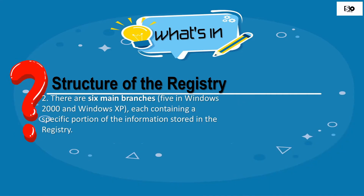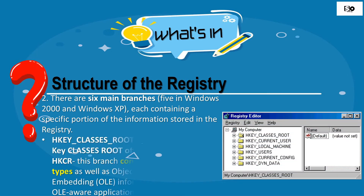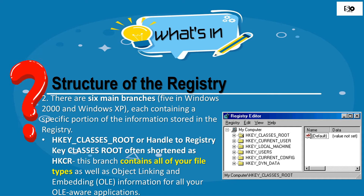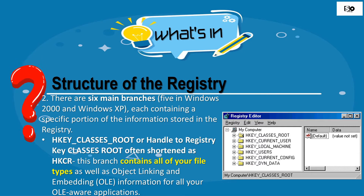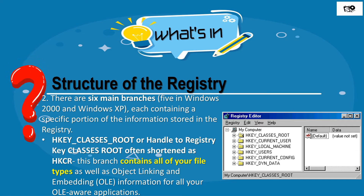There are six main branches — five in Windows 2000 and Windows XP — each containing a specific portion of the information stored in the registry. Number one is the handle-to-register key Classes Root (HKEY_CLASSES_ROOT). This branch contains all of your file types as well as Object Linking and Embedding (OLE) information for all your OLE-aware applications.